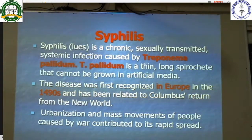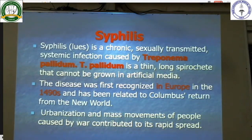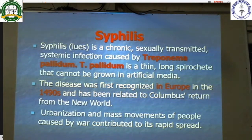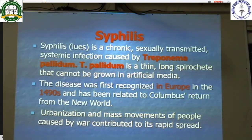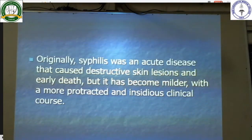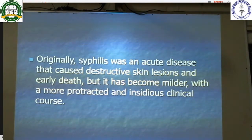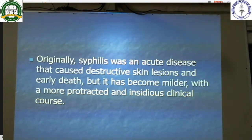Next infection: syphilis. Syphilis is a chronic sexually transmitted systemic infection caused by Treponema pallidum, a thin long spirochete that cannot be grown in artificial media. The disease was first recognized in Europe in the 1490s and has been related to Columbus's return from the new world. Urbanization and mass movement of people caused by war contributed to its rapid spread. Originally syphilis was an acute disease causing destructive skin lesions and early death, but it has become milder with a more protracted and insidious clinical course.